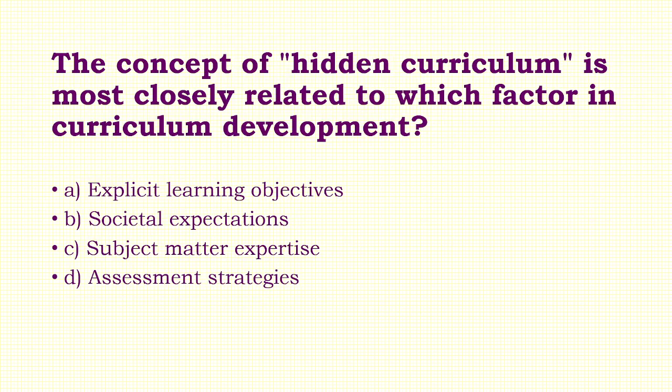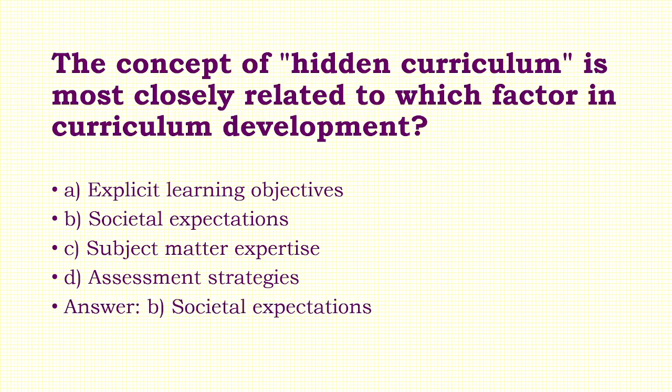Question 6: The concept of hidden curriculum is most closely related to which factor in curriculum development? Options: A) Explicit Learning Objectives, B) Societal Expectations, C) Subject Matter Expertise, D) Assessment Strategies. Answer: Option B — Societal Expectations.